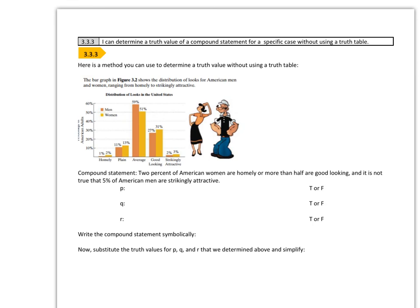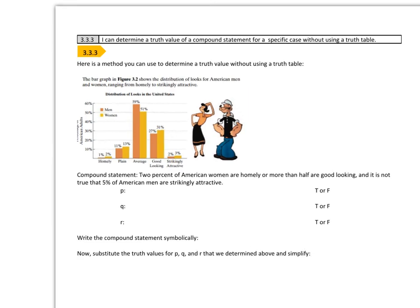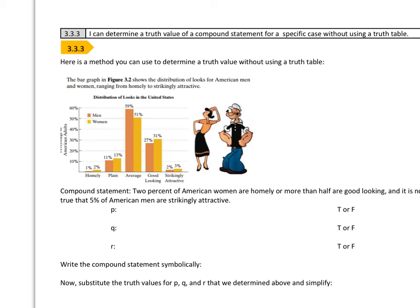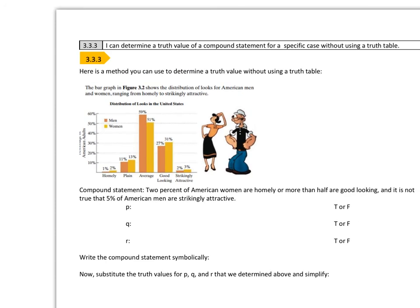Now we're going to determine the truth value of a compound statement without actually using a truth table. Let's look at this first example with good old Popeye and Olive Oyl. The bar graph shows the distribution of looks for American men and women ranging from homely to strikingly attractive. We are given this compound statement: two percent of American women are homely, or more than half are good looking, and it is not true that five percent of American men are strikingly attractive. Our simple statements are broken up by AND, OR, if-then, etc.